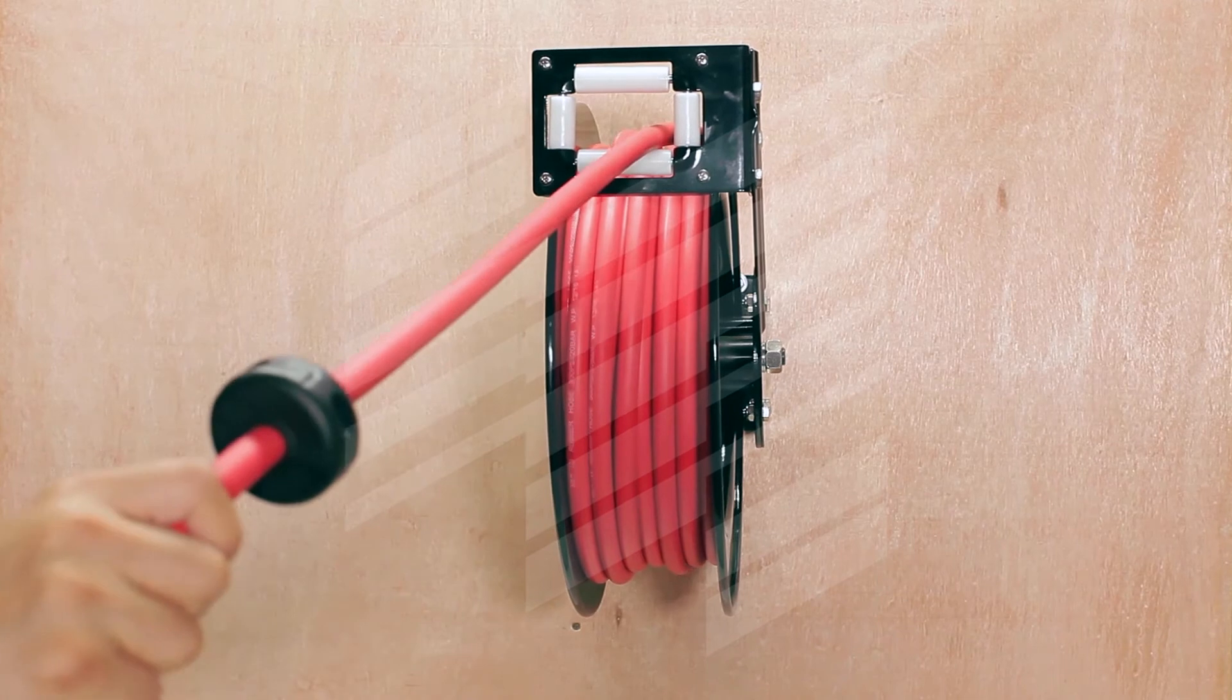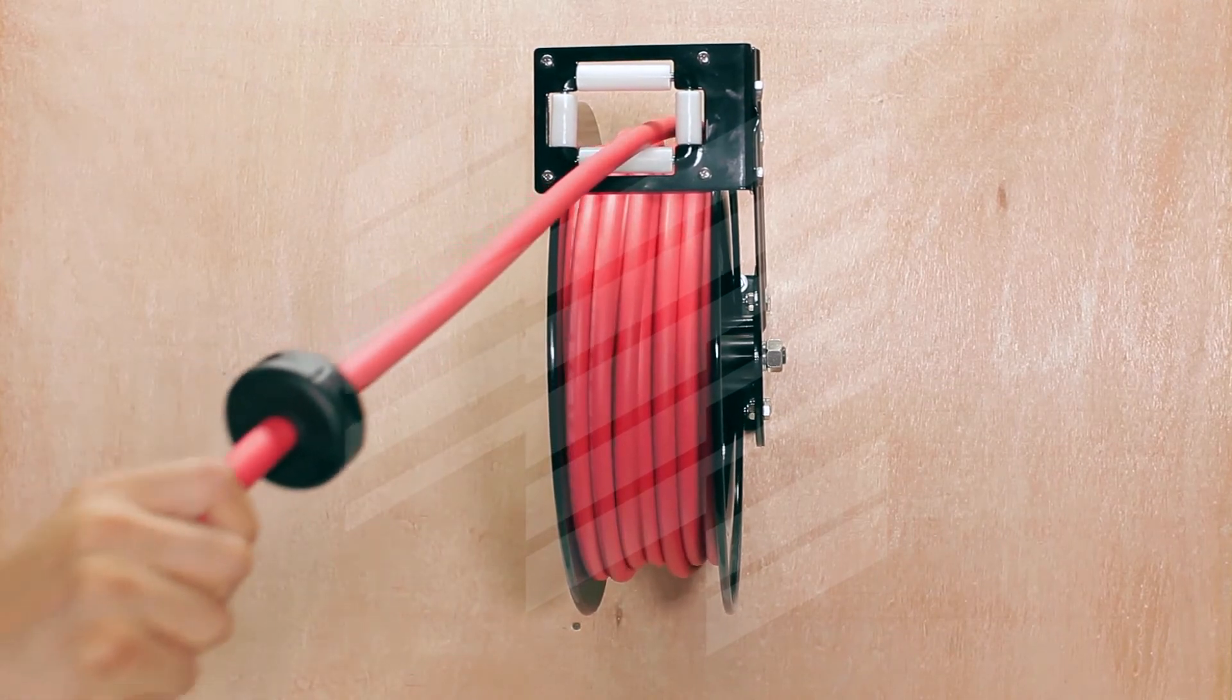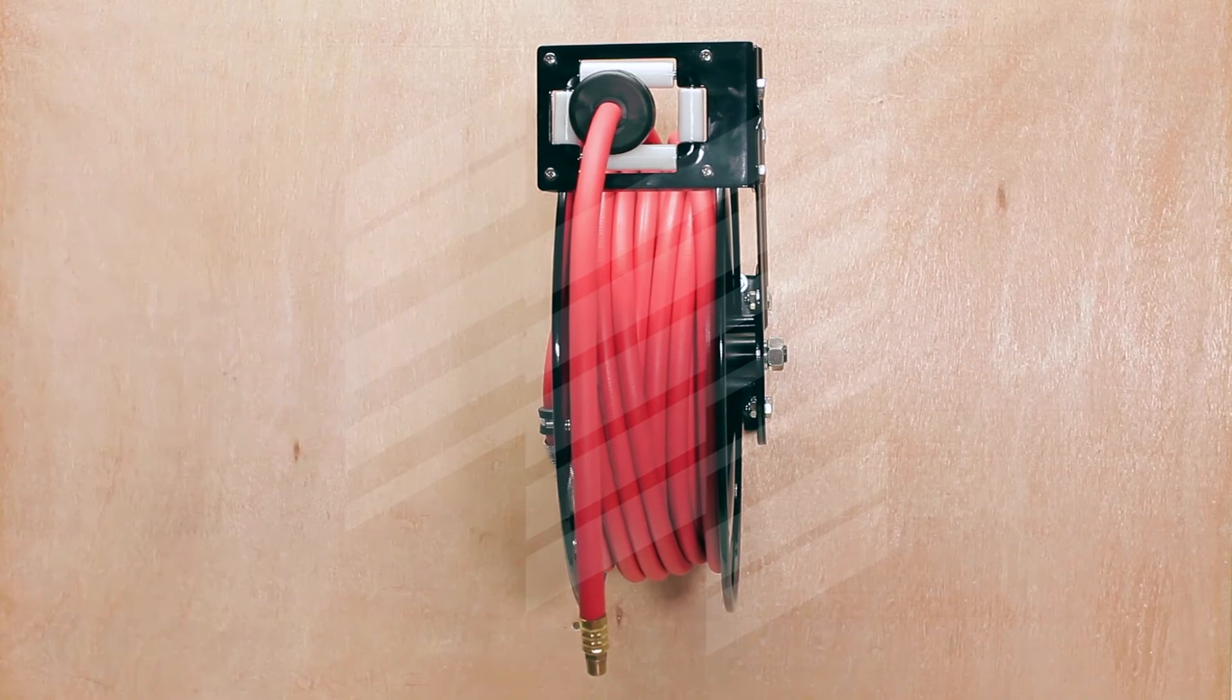To unlatch the reel, slowly pull out the hose about 1 foot. Then let the hose retract until the hose stopper rests against the hose guide opening.